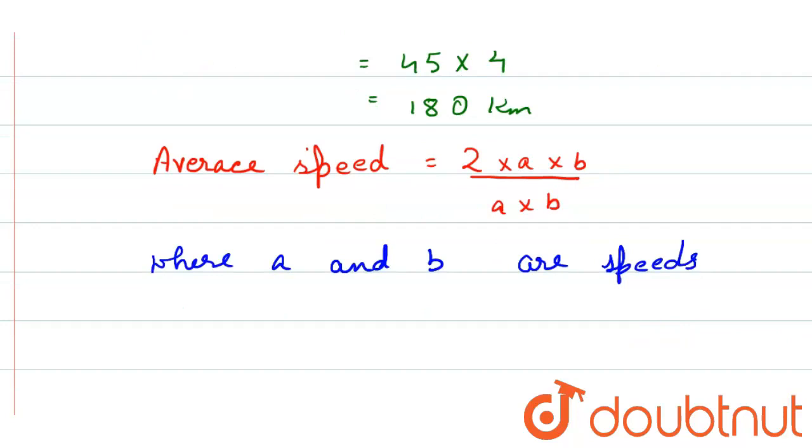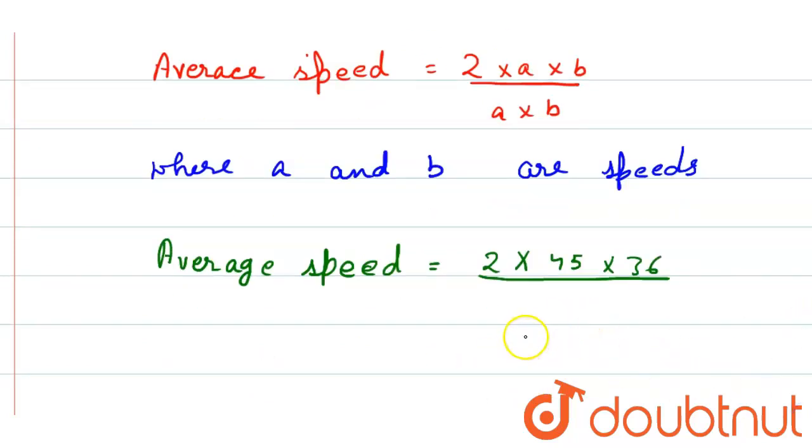So if we put the values, we will get average speed equals to 2 into 45 into 36 by 45... this is not multiplication, this is plus.